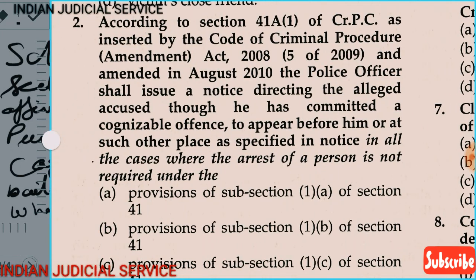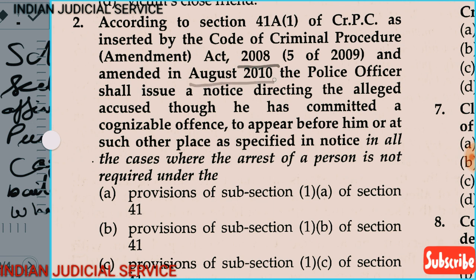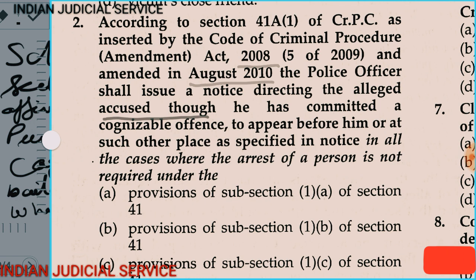Question 2: According to Section 41A, subsection 1 of CrPC, as inserted by the Code of Criminal Procedure Amendment Act 2008 and amended in August 2010, the police officer shall issue a notice directing the alleged person — who has committed a cognizable offense — to appear before him or at such other place as specified in the notice, in all cases where the arrest of the person is not required.